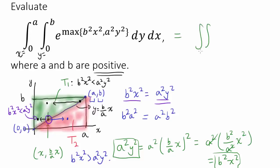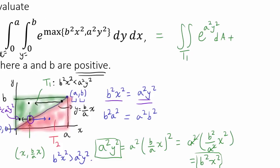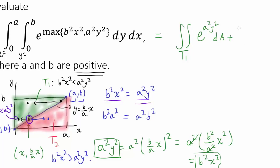So the original integral equals the double integral over T1 of e to the a squared y squared dA — since a squared y squared is larger on T1 — plus the double integral over T2 of e to the b squared x squared dA. We want to evaluate each of these and add them up.